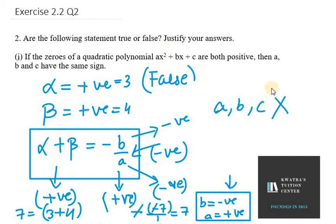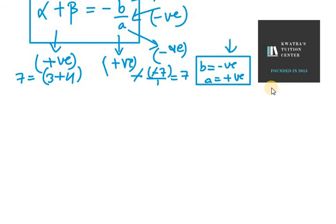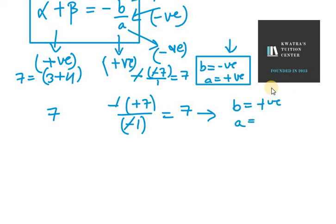Now in the second case, if I take the left hand side as 7, suppose we have B as positive 7 and A as minus 1. So minus minus gets cancelled out, we have 7 here. So left hand side equals right hand side. Now in this case what you can conclude is that B is positive and A we took is negative. So you can again see that they are of opposite sign.